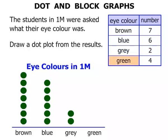And for green eyes there were four: one, two, three, four. So there we have it — that is our dot plot. Okay, you can understand why it's called a dot plot — it's full of dots!